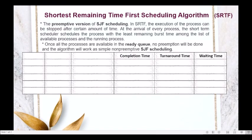For example, we are given five processes: P1, P2, P3, P4, and P5. Their arrival times are: P1 arrives at 1, P2 at 2, P3 at 0, P4 at 4, and P5 at 2.